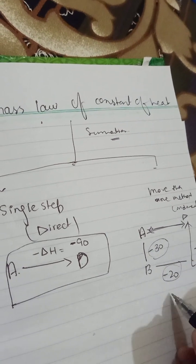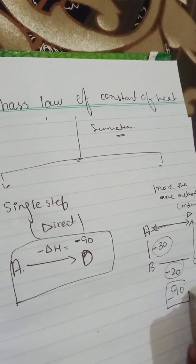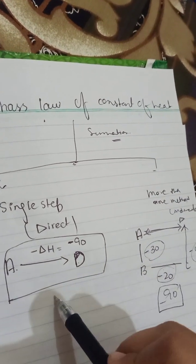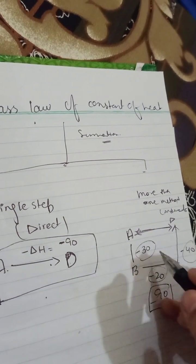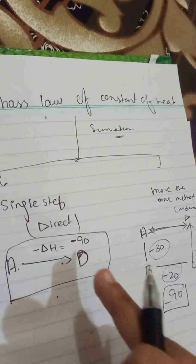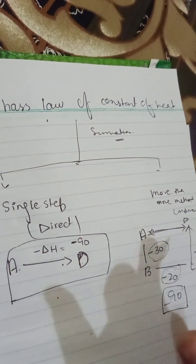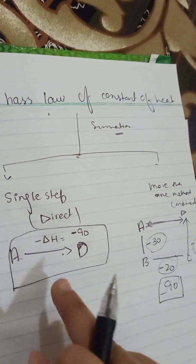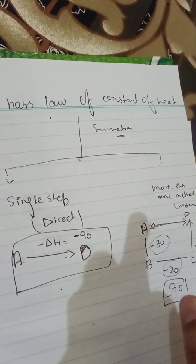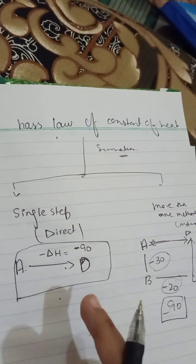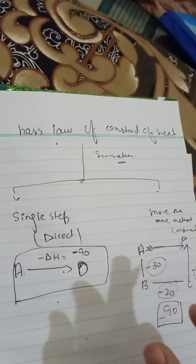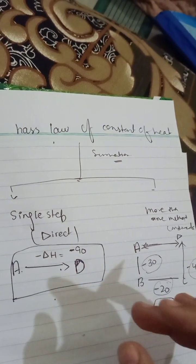So you can get 30 plus 20 plus 40 equals minus 90, so it was also the same. But it was having one step, a direct step, and here it is having the same product D, but it is having changes just because of the method. This is having a single step, this is having more than one step. So energy changes in both methods are the same.